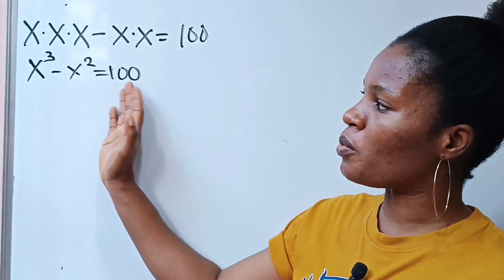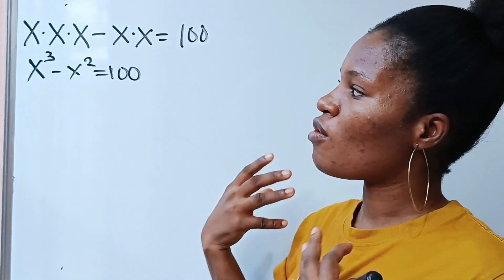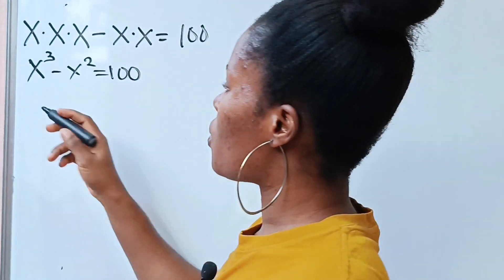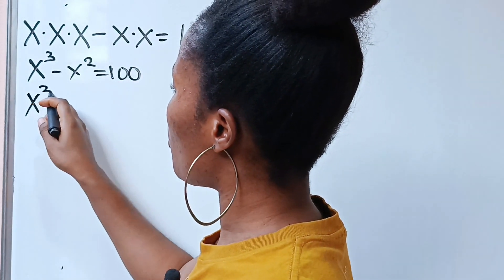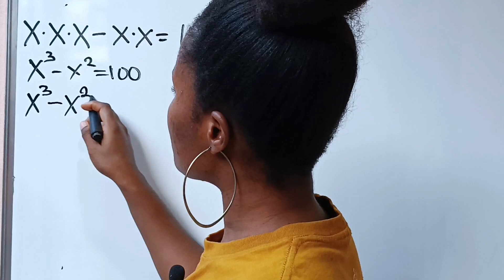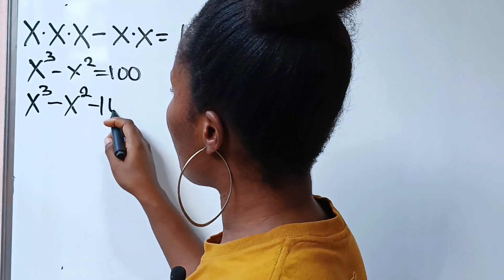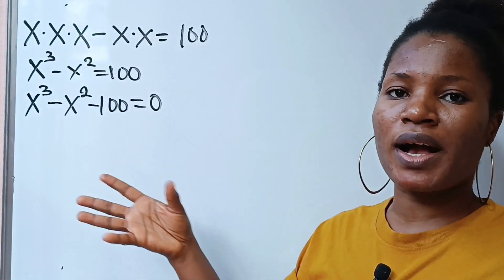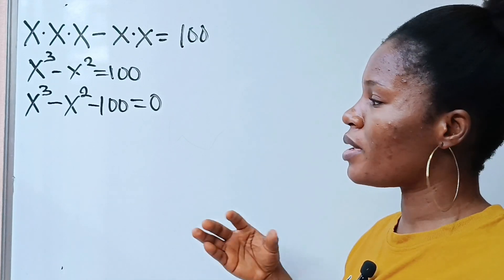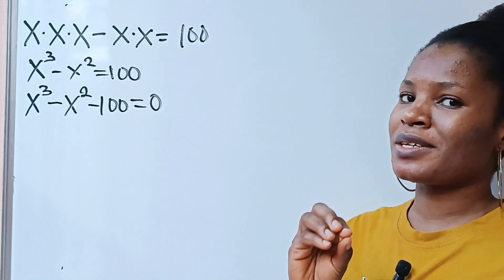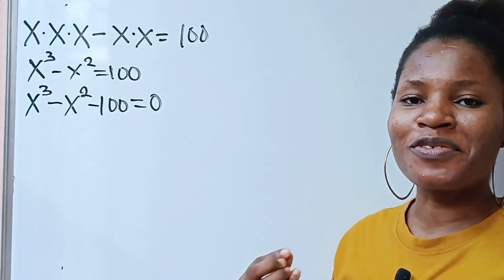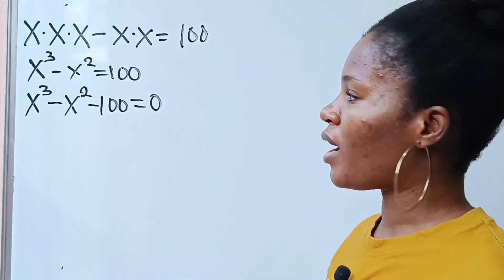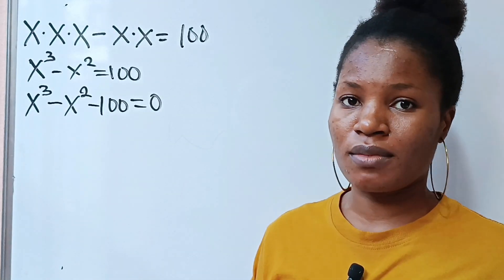All I'm going to do now is bring this in, because we just formed a cubic polynomial. We have x to the power of 3 minus x squared minus 100 is equal to 0. There are so many ways we can solve a cubic polynomial, but there is this particular method I always love to use, and that is the try-and-error method. It saves me a lot of time because it works for almost all of them.